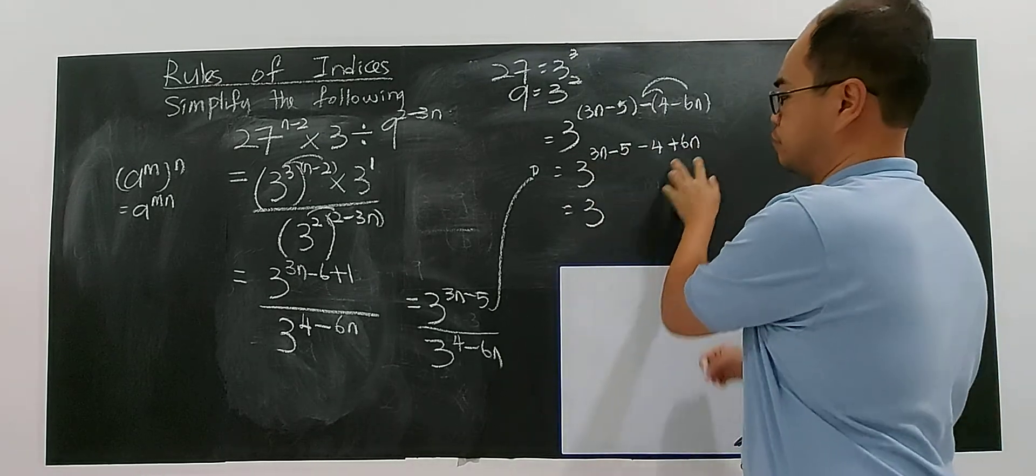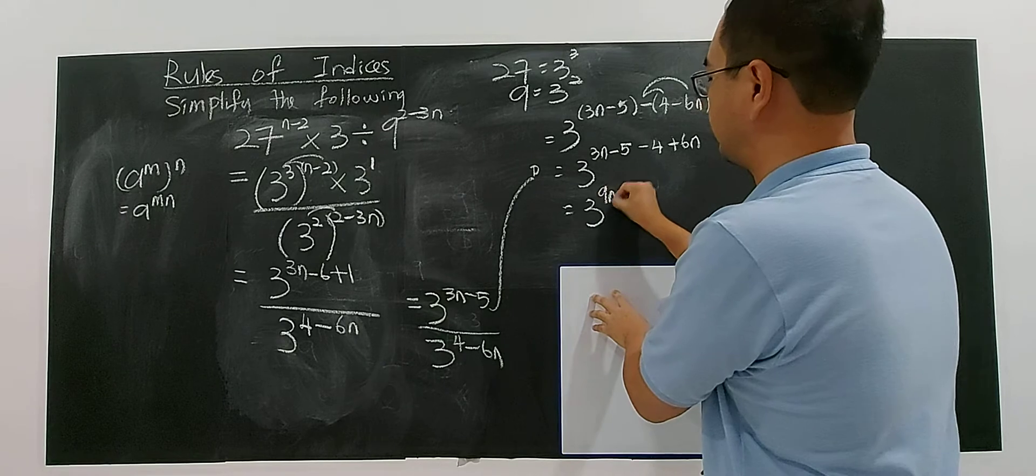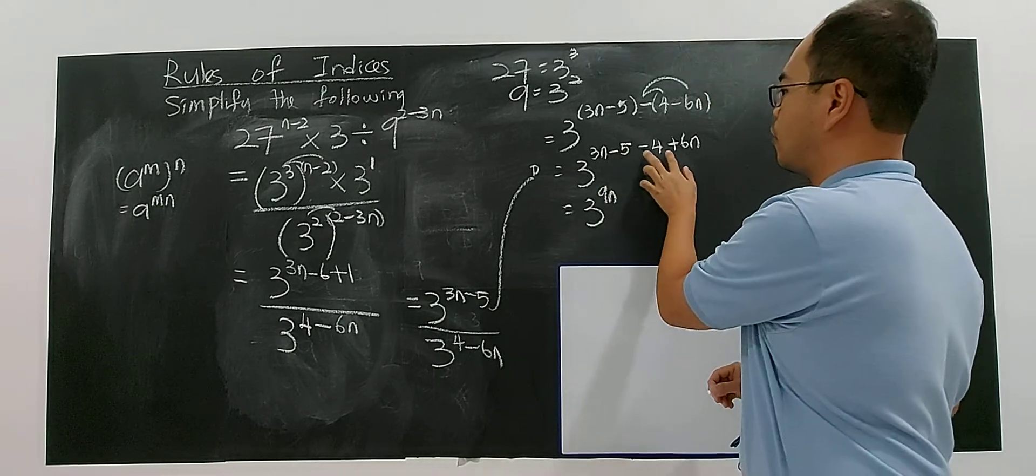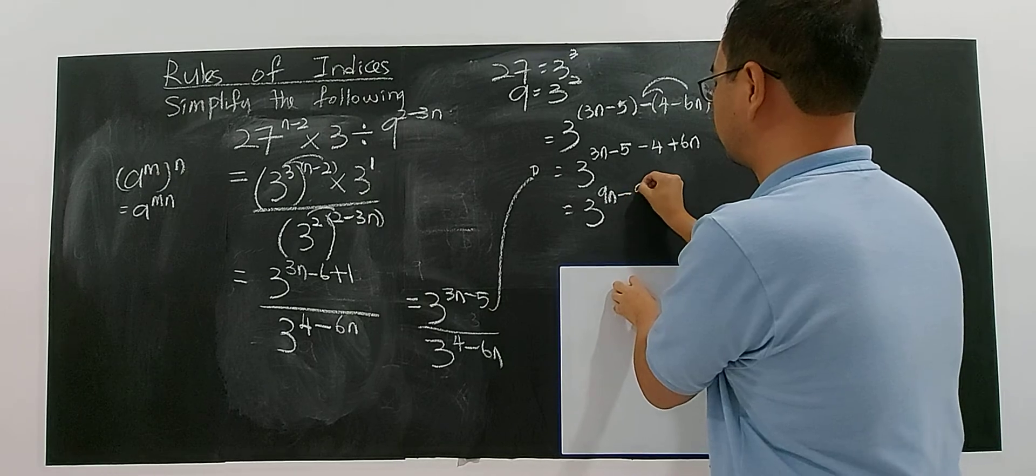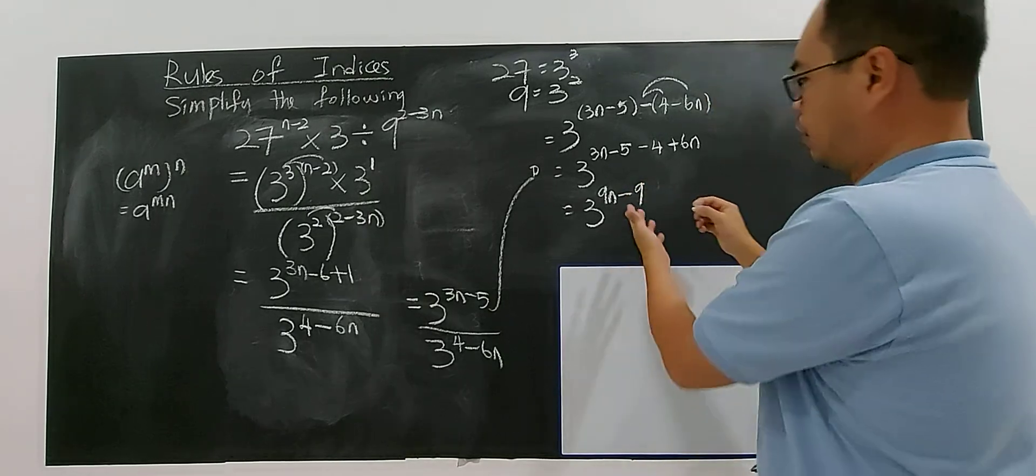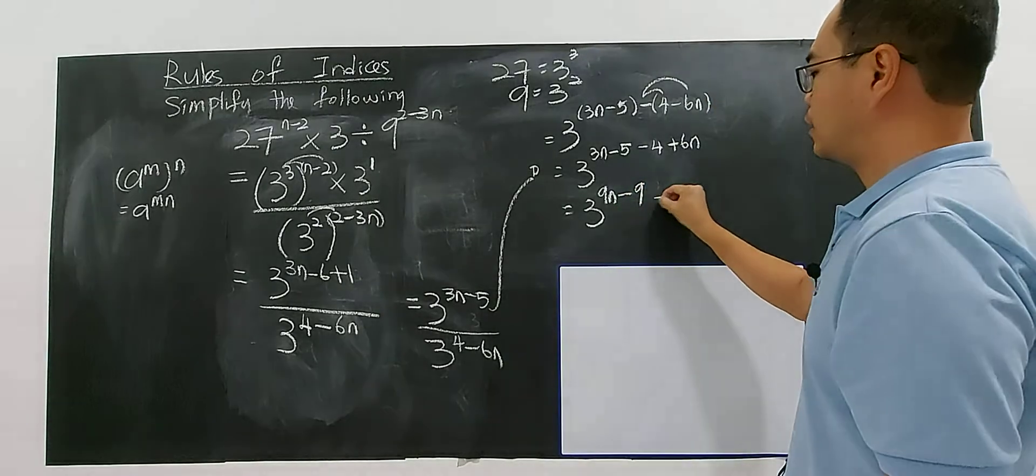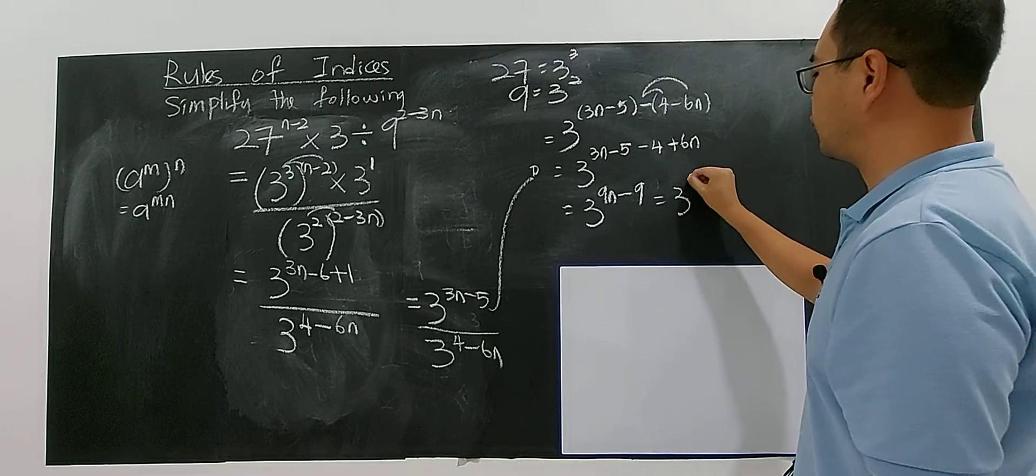3n plus 6n, you have 9n. Minus 4 minus 5, you get negative 9. So it's already simplified, but you can make it nicer - you can factorize the 9.